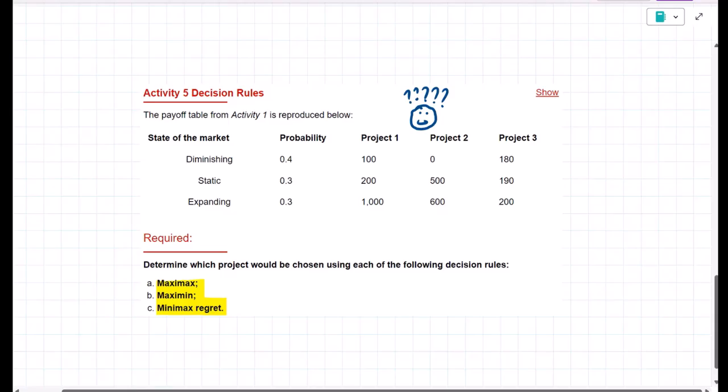And now I see the rows. This is the market state. So we see the worst-case scenario, a diminishing market, and we see the best case scenario, an expanding market. Then in the middle, we have that static market.